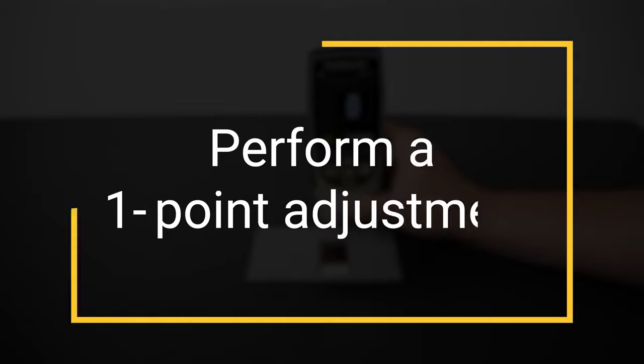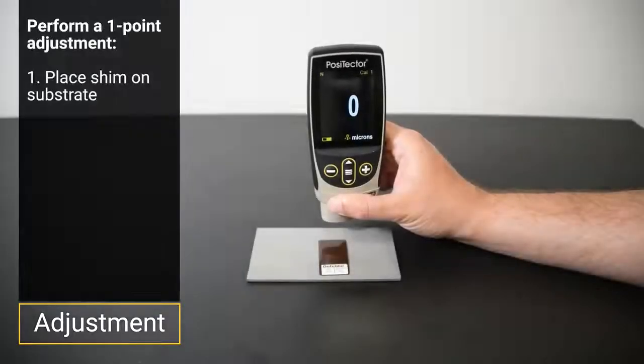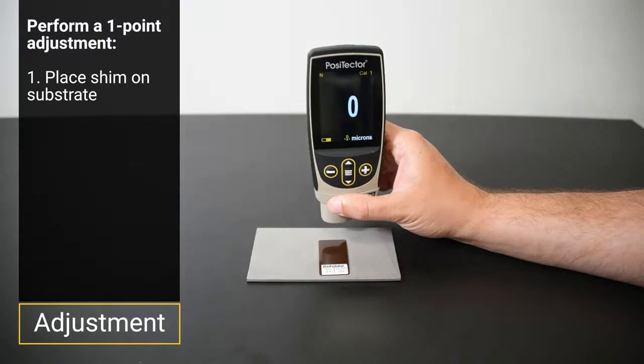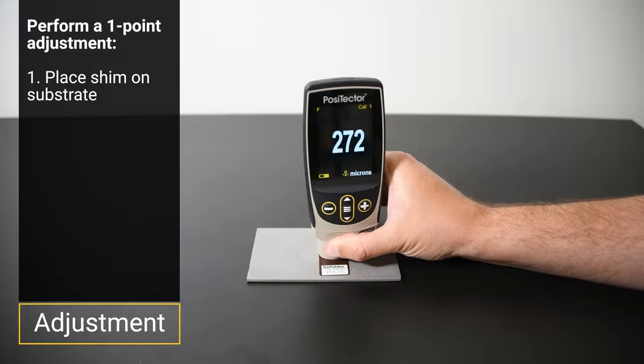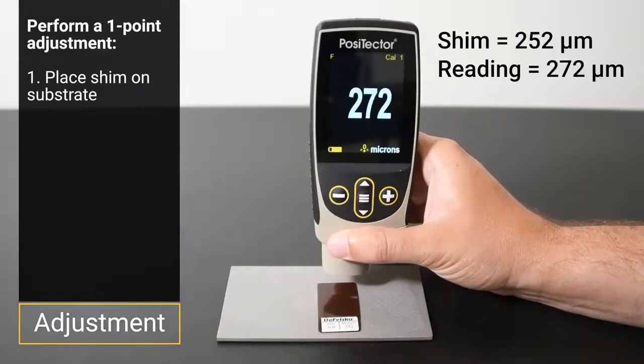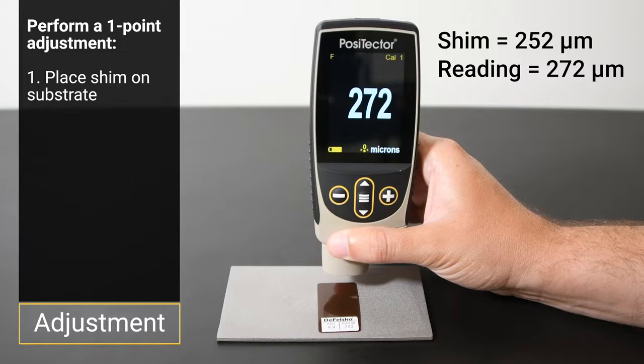To adjust for surface profile, a one point adjustment is required. Choose one of the included shims that is near the expected coating thickness and place it on the uncoated blasted substrate. The instrument will typically read higher than the thickness of the shim, reflecting the difference between the magnetic surface and the peaks of the profile.